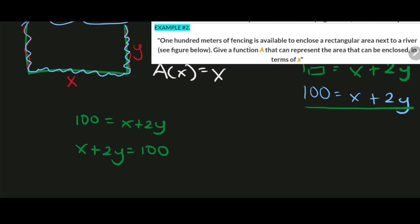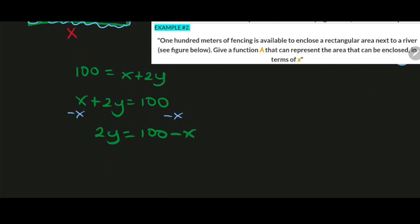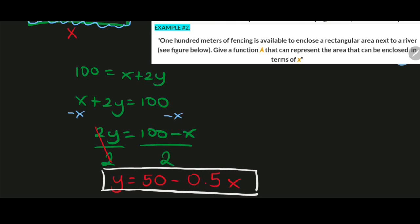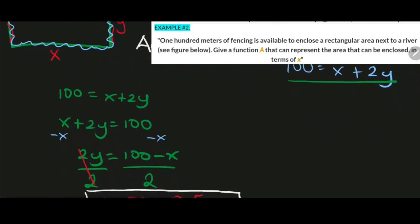Dividing both sides by 2 to solve for Y, we get Y equals 100 divided by 2 minus X over 2, which simplifies to Y equals 50 minus 0.5X. Now we have the value of Y, and we will substitute this into our area function.